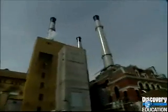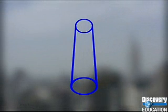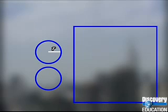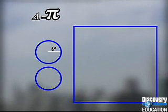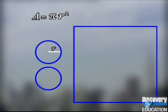The smokestacks on this building are cylinders. A cylinder is a three-dimensional object that has parallel bases that are congruent circles with the surface connecting them. To figure out the surface area of a cylinder, break the figure down into its elements. Each base is a circle, and the surface unwraps to form a rectangle. The area of a circle is pi times r squared. There are two bases, so multiply the answer by two.